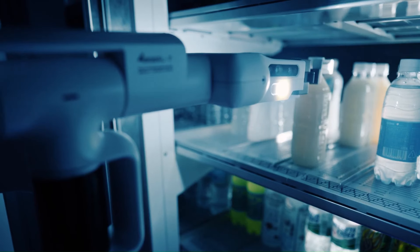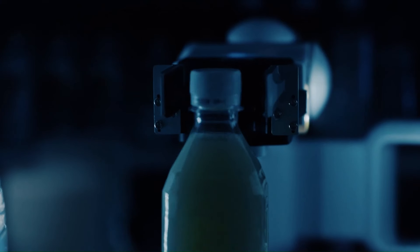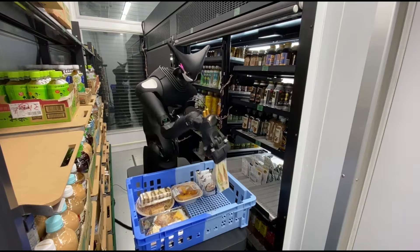It also has a dexterous manipulator arm that can pick up and manipulate objects of various shapes and sizes. TeleXistence envisions the Model T being used for a variety of tasks in retail stores, such as stocking shelves, helping customers, and cleaning.